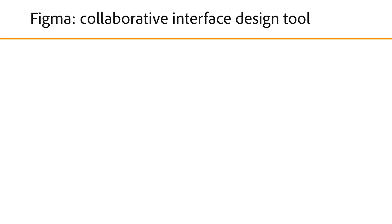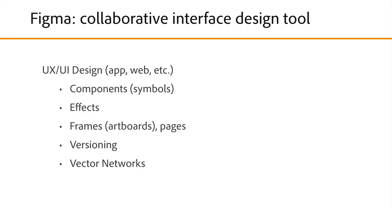Figma actually calls itself a collaborative interface design tool. What does that mean? It just means that people are using it for UX design, for websites, for apps, that type of thing — and we can share it and create a prototype right within the tool. You can create a UX UI design, work with components, which are actually called symbols in a lot of applications. You can apply effects like drop shadows, blurs, and different things like that.